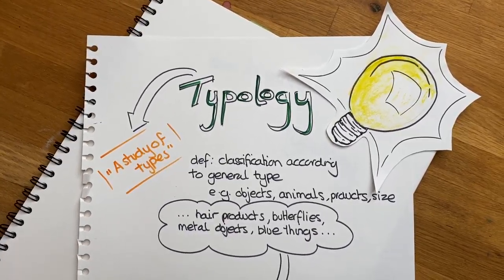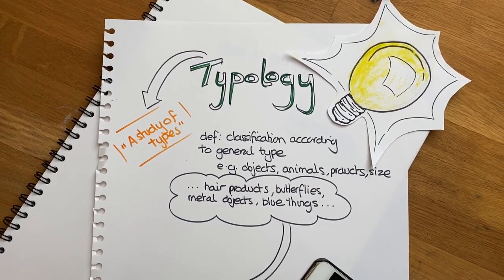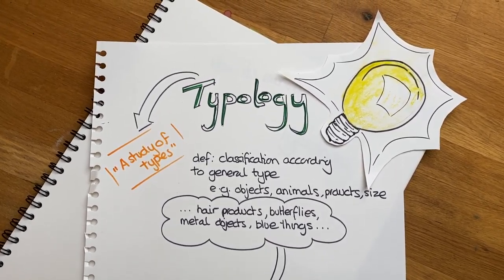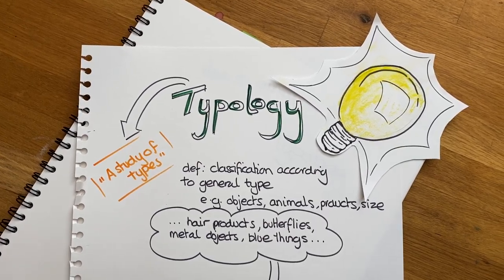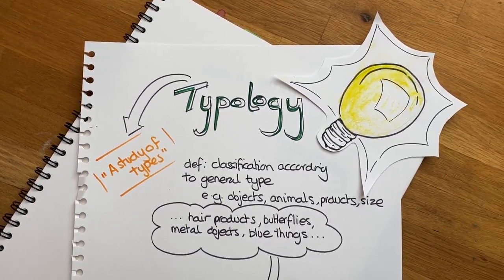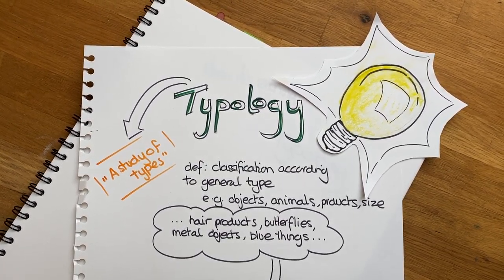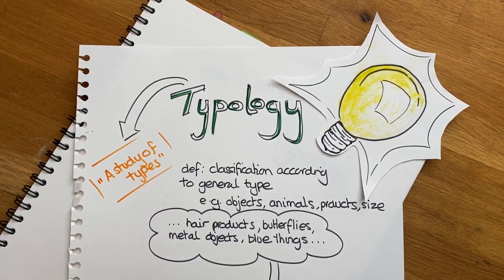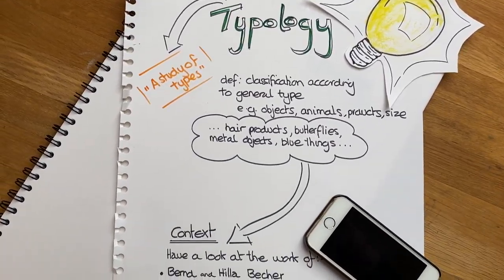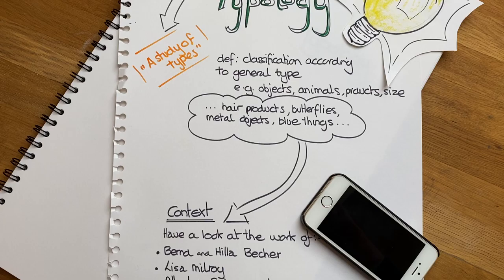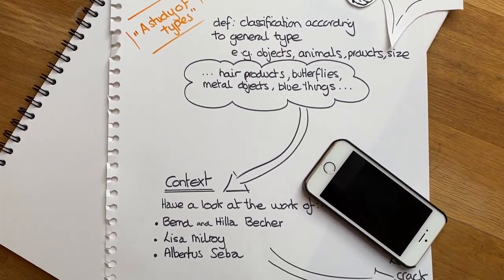So what are we going to do today? I'd like you to go around your house, come up with a plan, come up with a type — a typology of what you would like to photograph. You're going to need your mobile phone, and you're going to come up with your own category.